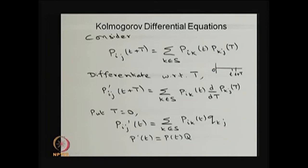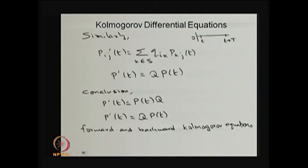In matrix form, this gives P'(T) = P(T) * Q, where P(T) is the matrix of transition probabilities and P'(T) is its element-wise derivative with respect to T. This is called the forward Kolmogorov differential equation. If instead the small interval is placed at the beginning, we get P'(T) = Q * P(T), which is called the backward Kolmogorov differential equation.